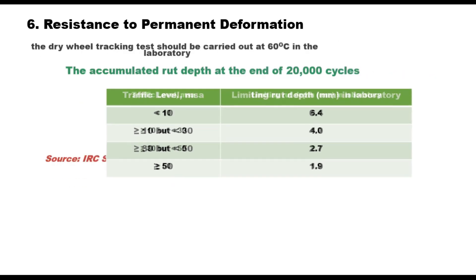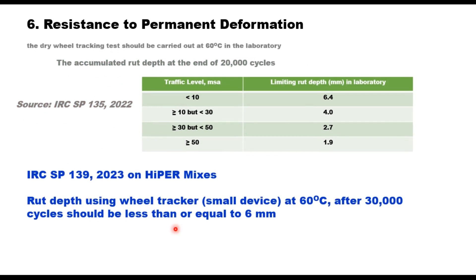IRC SP 139:2023, which deals with high performance mixes and high performance binders, suggests that rut depth using a wheel tracker at 60°C should be limited to 6 mm after 30,000 cycles — that is the criteria given in IRC SP 139 for rut depth.